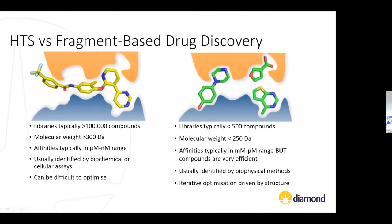We have a large user community made up of researchers from pharmaceutical companies and academia who are making increasing use of macromolecular crystallography to identify starting points for drug discovery projects. To explain why that is, I'll give a brief introduction to FBDD and our platform. Typically for drug discovery projects, HCS was the traditional method for identifying leads — screening large libraries of typically greater than 100,000 compounds, which are lead-like molecules with molecular weights larger than 300 daltons.